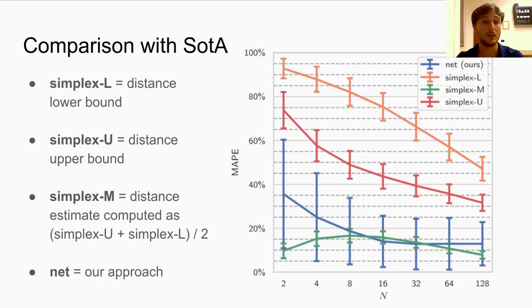And this plot shows the mean average percentage error of our method and some variation of the n-simplex approach. The orange and red lines are obtained when using respectively the lower bound and upper bound provided by the n-simplex projection as the estimate of the real distance. The green line instead shows the error when we take, as the estimate of the distance, the mean between the upper and lower bound. While the blue line represents our approach, we can see that our model provides better performance with respect to the pure upper and lower bounds, given by the n-simplex method.